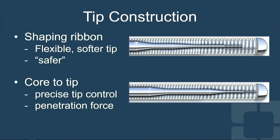What about the tip construction itself? The core can be extended almost to the tip of the wire, and at that end the core is attached to the tip using a shaping ribbon — these types of tips are very flexible and safer. Or the core can extend all the way to the tip, called core-to-tip construction. That gives far more precision at the tip and increases the penetration force of the wire, but obviously that has its own problems.